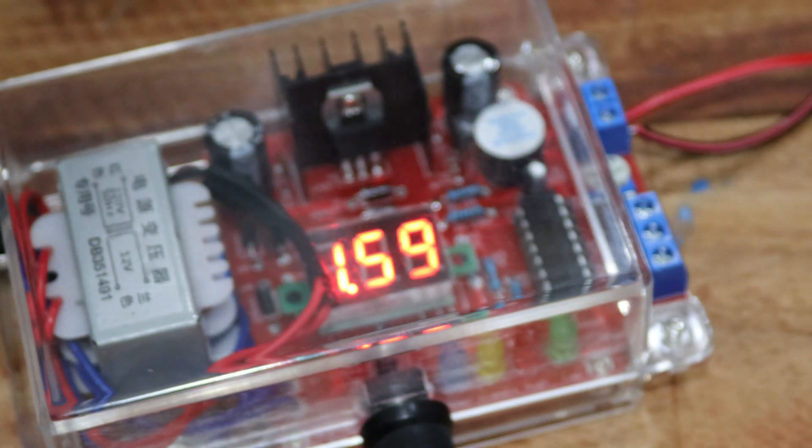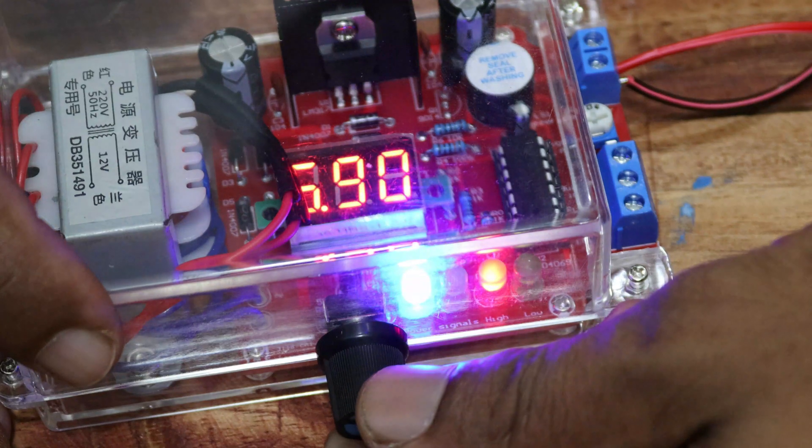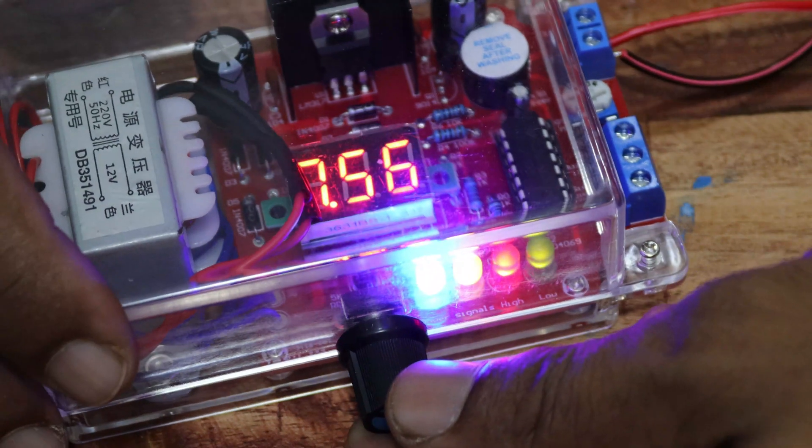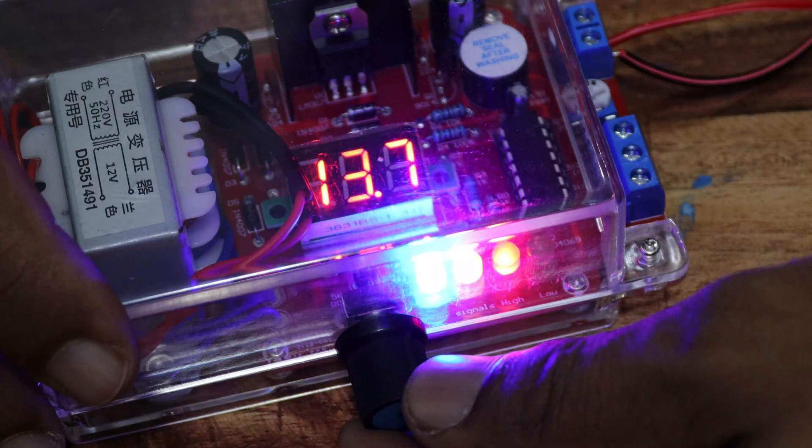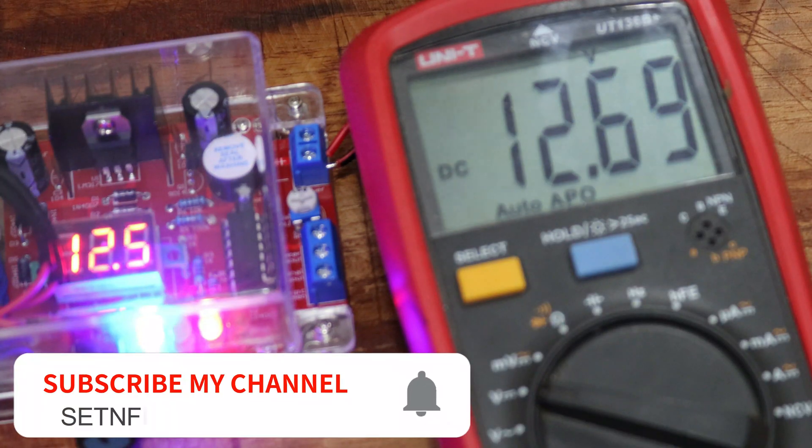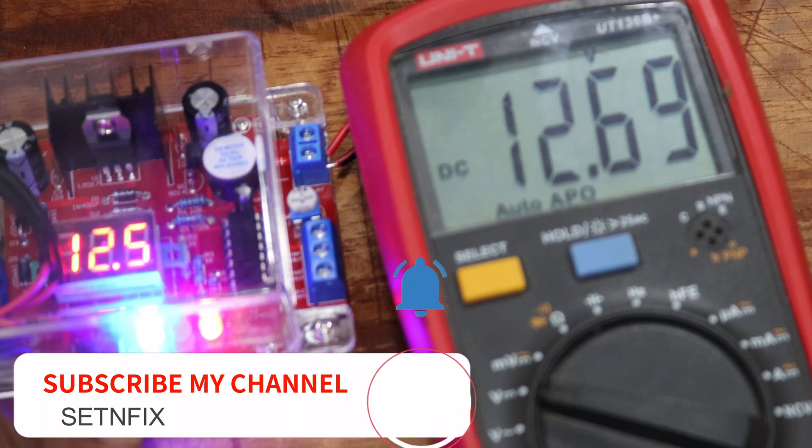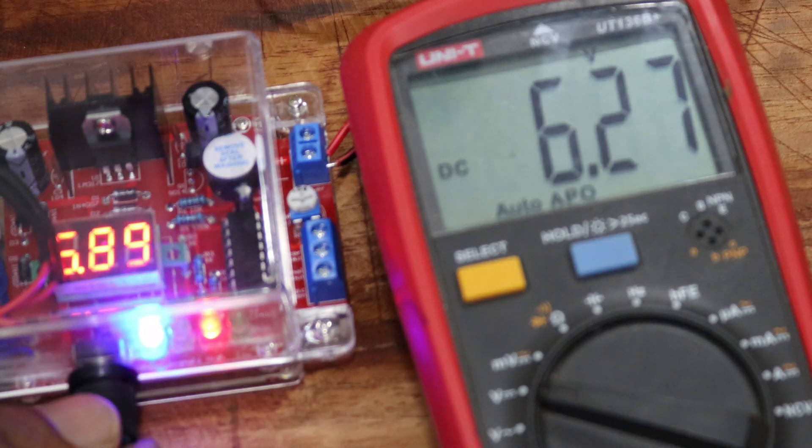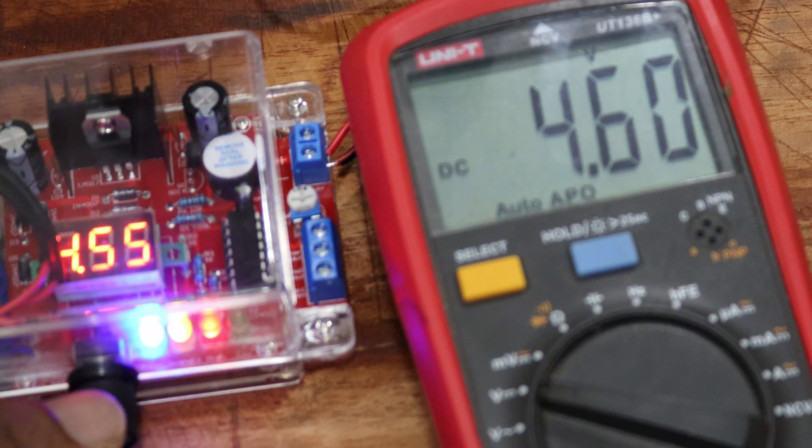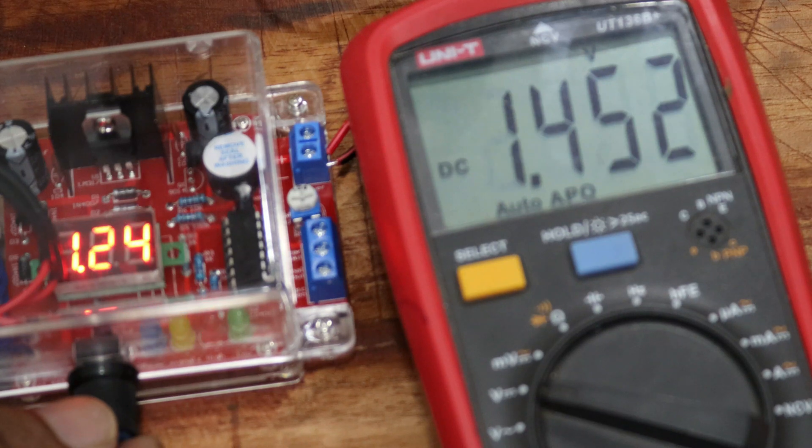I gave power to the power supply and you can see the readings of the voltmeter. I connected the multimeter with the power output. You can see the voltage increases up to 14 volts and the minimum voltage is 1.24 volts. The important part is the voltage readings of both are almost the same.